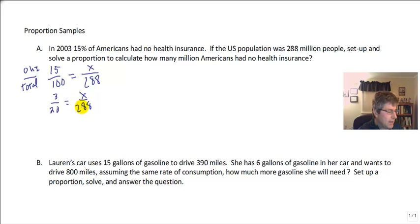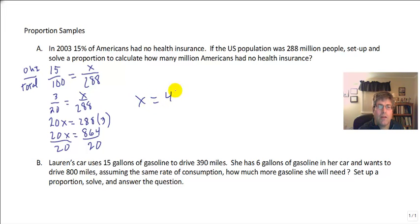That makes my numbers pretty easy to work with. So multiplying the means and the extremes or cross multiplying, I get 20x equals 288 times 3, which is 20x equals 864. I divide both sides by 20, and I get x equals 43.2. So x is 43.2, which in this case is 43.2 million Americans with no health insurance.